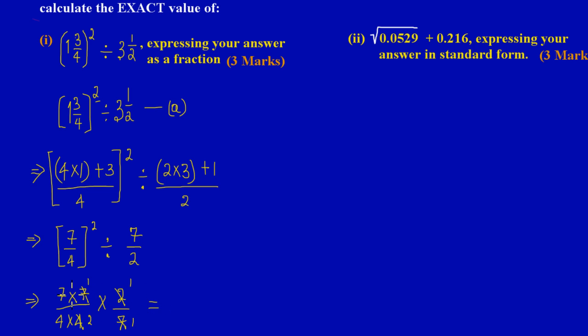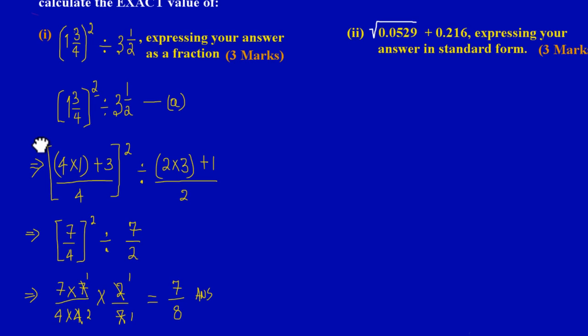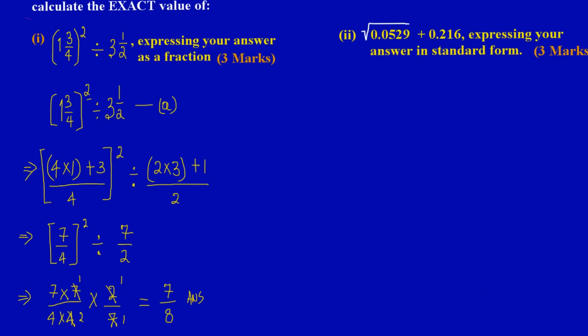I'm left with 7 times 1 is 7 times 1 is also 7. So in my numerator I have a 7 and that is all over 4 times 2 is 8 and 8 times 1 is also 8. So my answer is 7 over 8. And that's my answer.